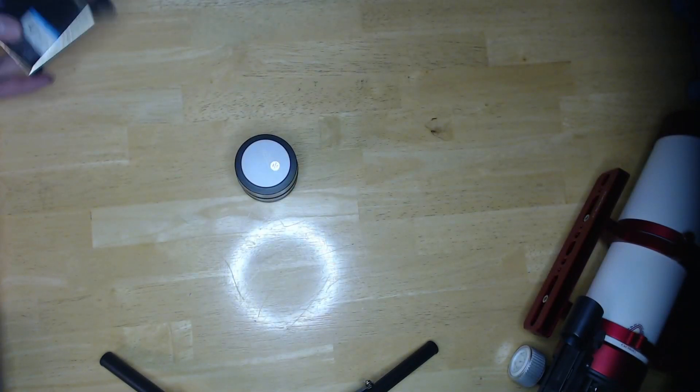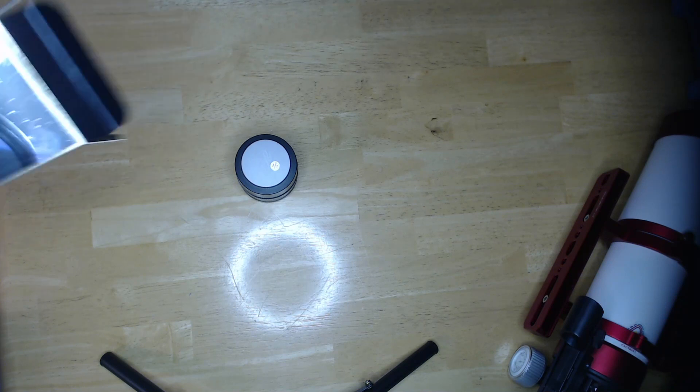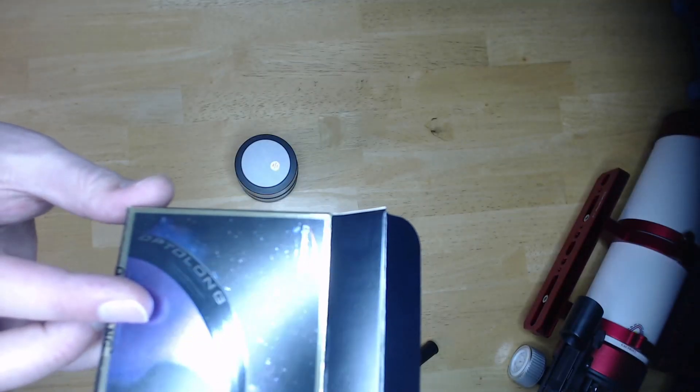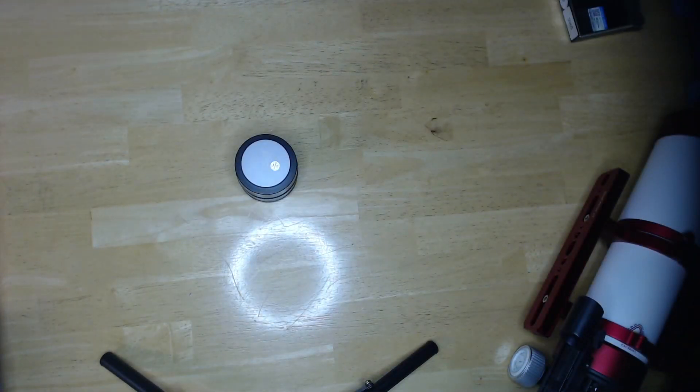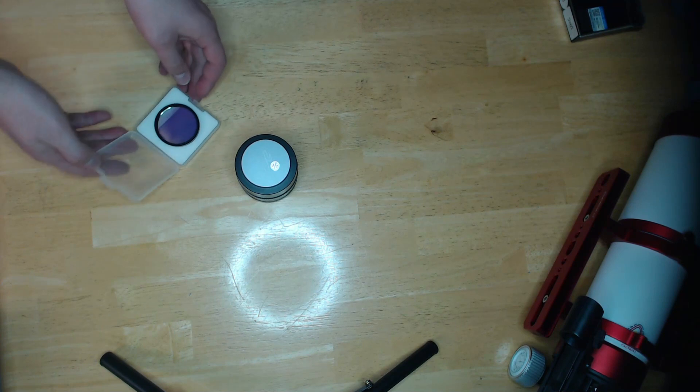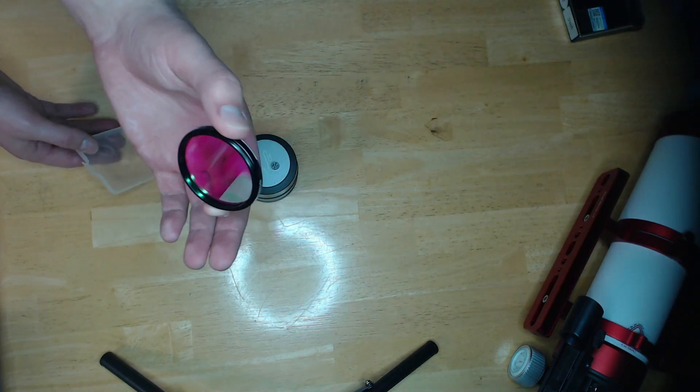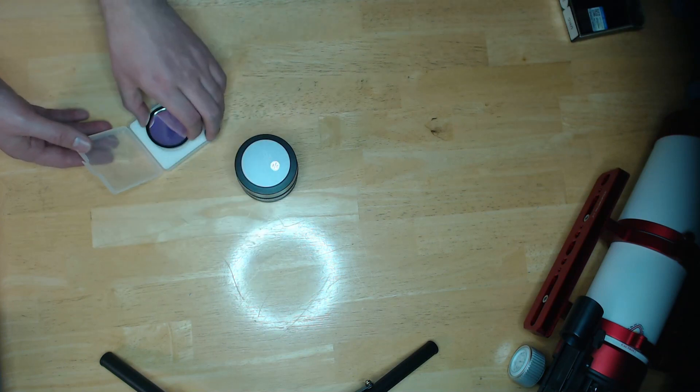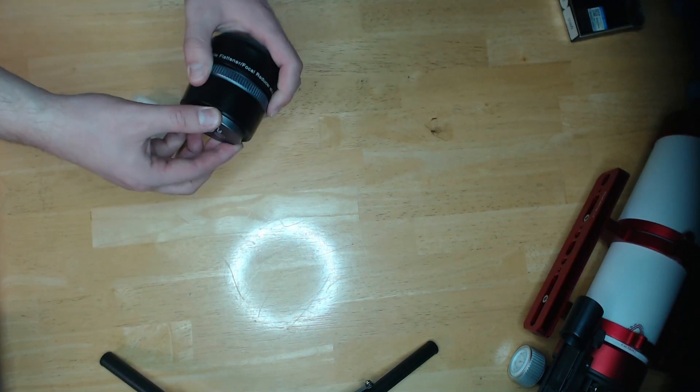Today I'll be installing this Optolong UHC filter, a fairly inexpensive entry-level filter for eliminating light pollution. This is a 2-inch filter. The 6A3 only accepts 2-inch filters by default. If you wish to use a 1.25-inch filter, you'll also need an adapter.